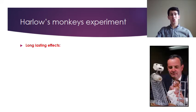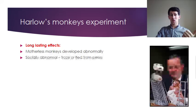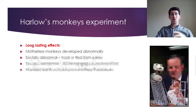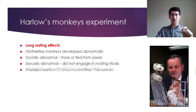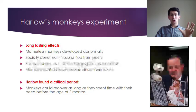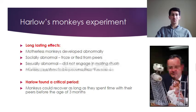Harlow found long-lasting effects: monkeys raised with only wire or cloth mothers developed abnormally, becoming socially abnormal — freezing or fleeing from peers — and sexually abnormal. Those mothers from the experiment also tended to become poorer mothers themselves. However, Harlow found a critical period: monkeys could recover from these damaging effects if they spent time with peers before the age of three months.